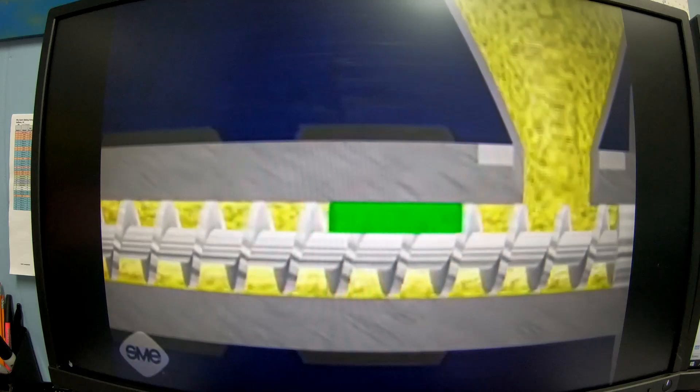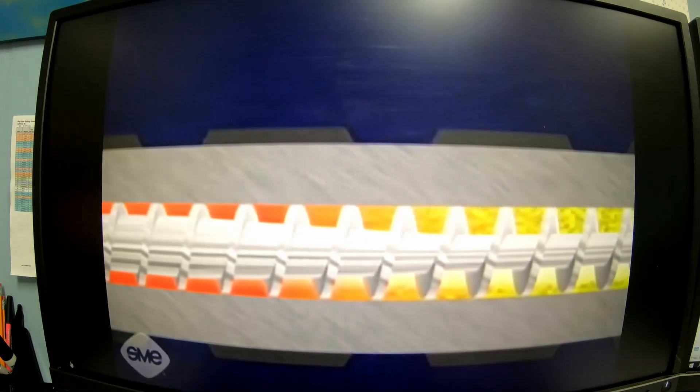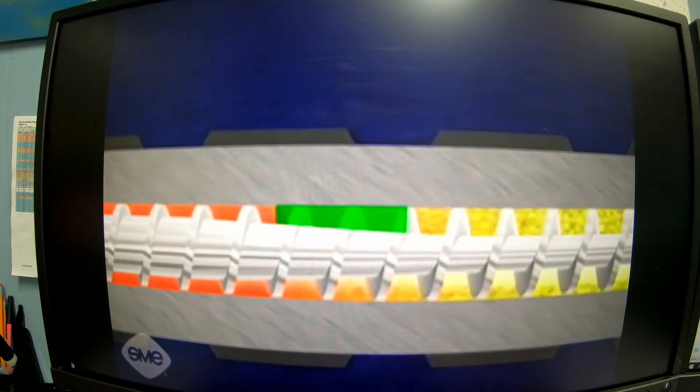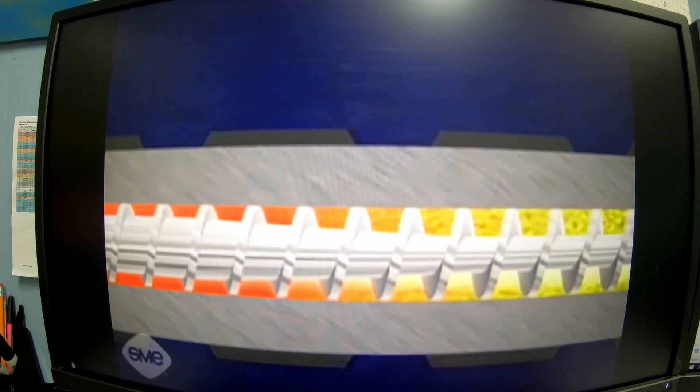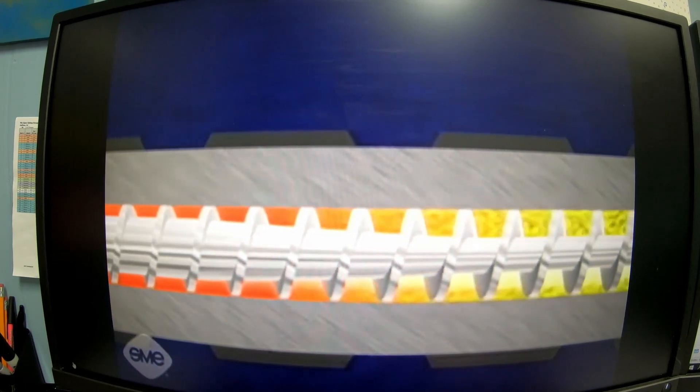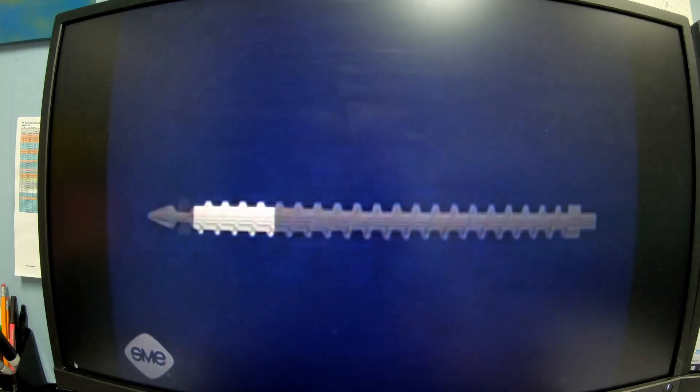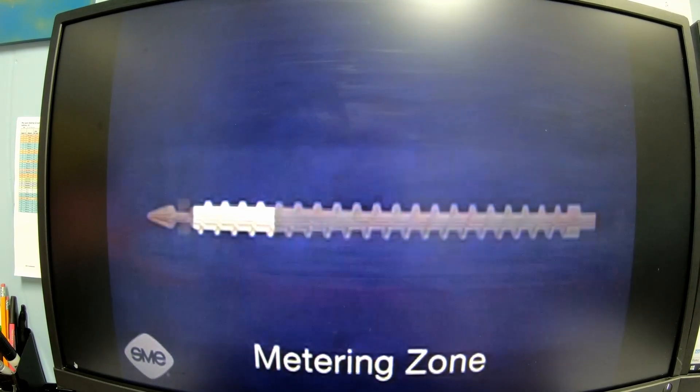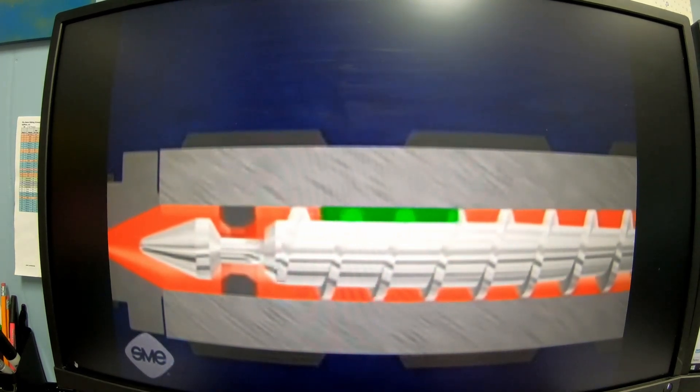The second zone called the melt zone has a decreasing flight depth which reduces the plastic volume. This causes the plastic molecules to rub harder against each other, plasticizing the material. The melt zone leads to the third or metering zone. The metering zone has a constant flight depth much smaller than that of the feed zone. This section acts as a pump.